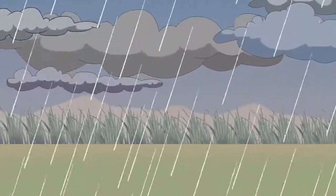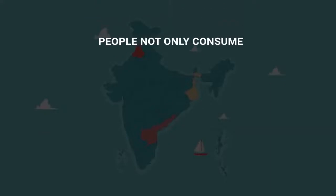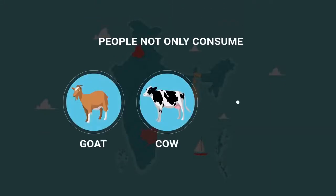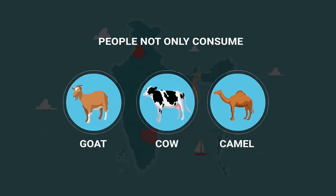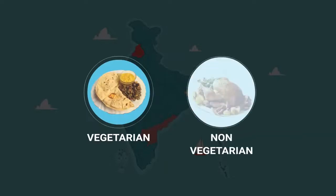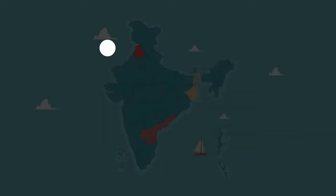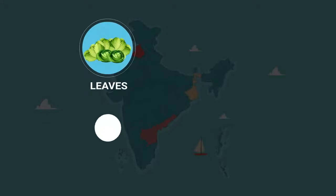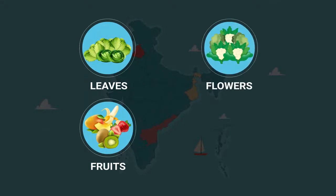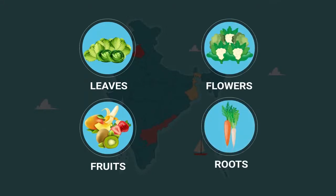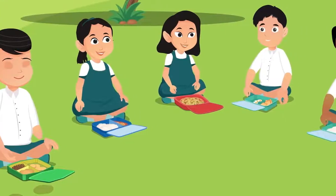Weather determines what kind of food crops can be grown in a region. Based on availability, people not only consume milk from cows and goats but even camels. Culture determines if people consume vegetarian, non-vegetarian, or other specific kinds of food items. All parts of a plant, including leaves, fruits, flowers, and even roots, are consumed as food.